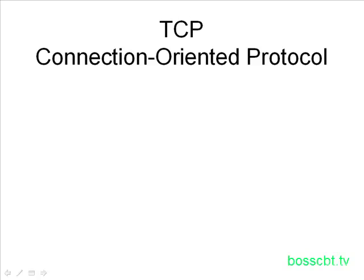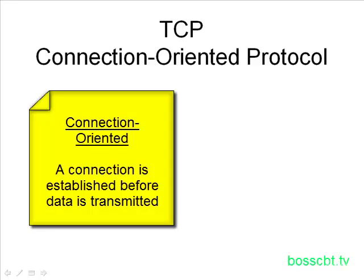Hello and welcome to this tutorial. We're going to talk about TCP and how it is a connection-oriented protocol. You might recall from the introduction to TCP and UDP video that TCP is connection-oriented and UDP is connectionless. Connection-oriented means before two devices send and receive any data to each other, they first establish a connection. In other words, they negotiate how they want to send and receive — all the different parameters and details involved in that communication — and then once they're both happy with that, they move on to sending data.